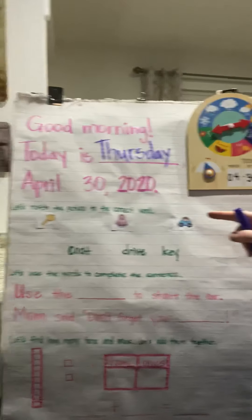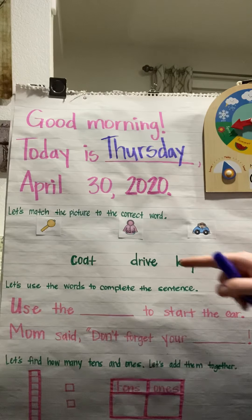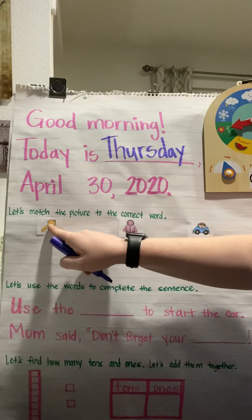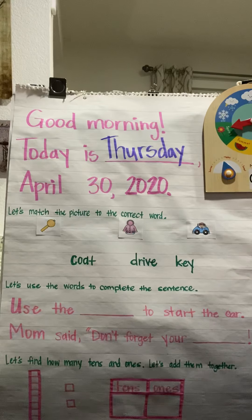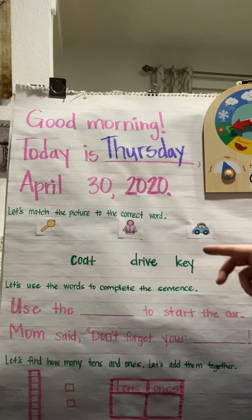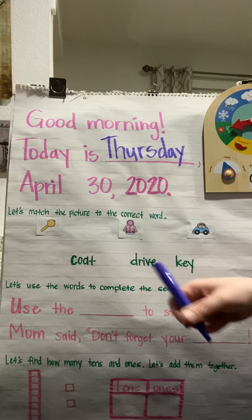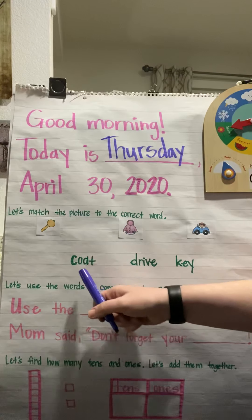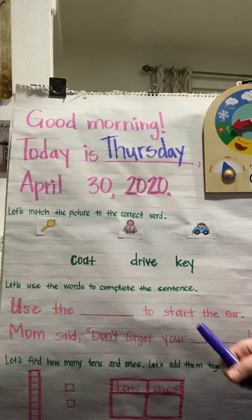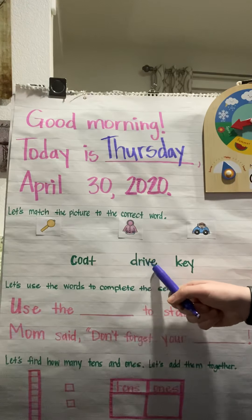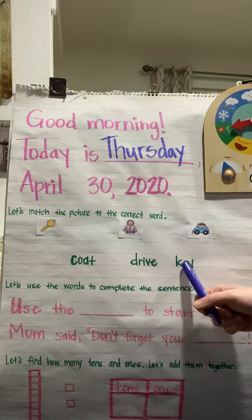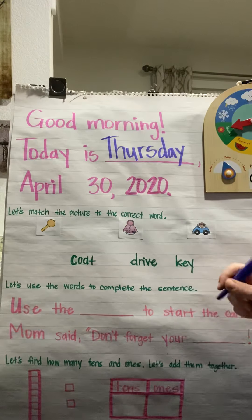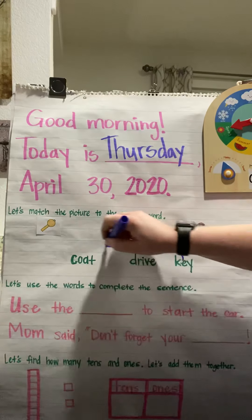Our first skill says let's match the picture to the correct word. So we have a picture — what is this picture of? It's a key, right? So I'm going to check these three words and try to find the one that says key. K-E-Y. If I stretch that word, it sounds just like that. Let's look at the first one: C-O-A-T — coat. D-R-I-V — drive, right? And then K-E-Y. We know that when we put an E and a Y together it makes a long E sound, so it could be K-E-Y — key, right?